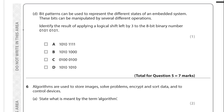We need to identify the result of applying a logical shift left by 3 to an 8-bit binary number. A logical left shift brings in three zeros at the right end. A quick way to check the options is that the result must end in three zeros. Only one option has three trailing zeros, so that's the answer. The first three bits of the original shift out and are lost.